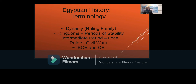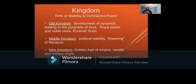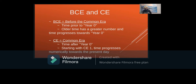Is everybody familiar with BCE and CE? It's not AD and BC anymore — it is now BCE, Before the Common Era. There were three main kingdoms, which were times of stability and centralized power. The Old Kingdom is known for the development of the pyramids at Giza, royal power, the noble class, and pyramid texts. The Middle Kingdom saw political stability and a flowering of literature. The New Kingdom was the golden age — wealth and military might, the very height of ancient Egypt.